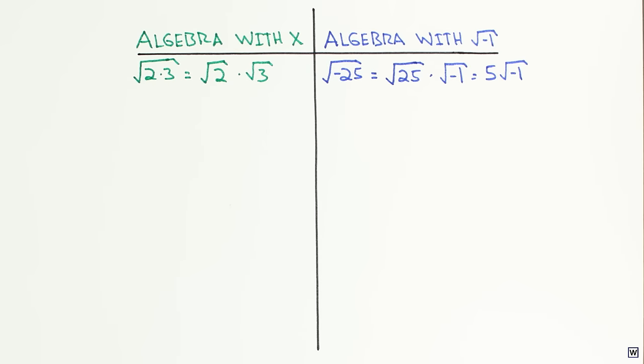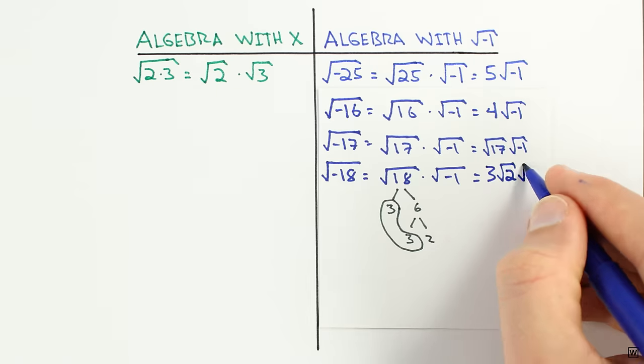We can use this process to expand the root of any negative number, writing it as some number we already know about times the square root of minus 1.